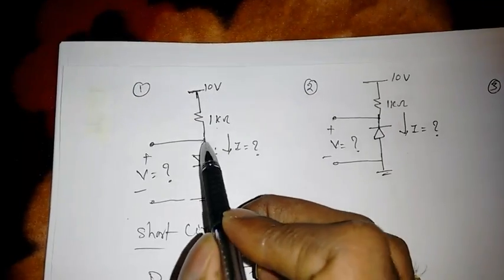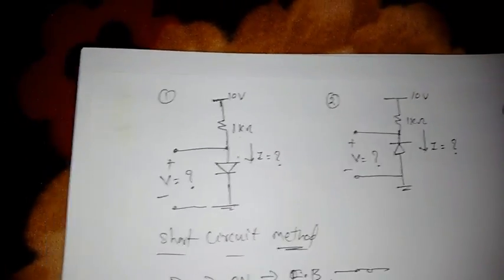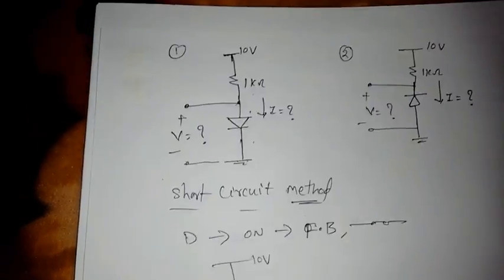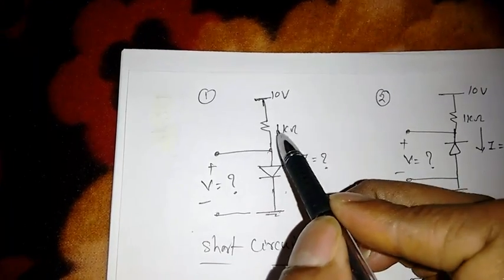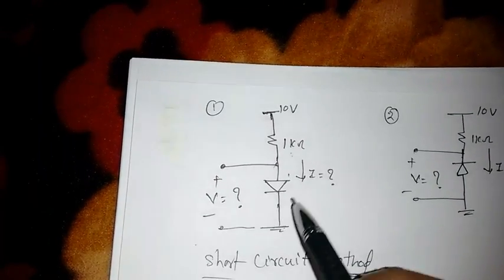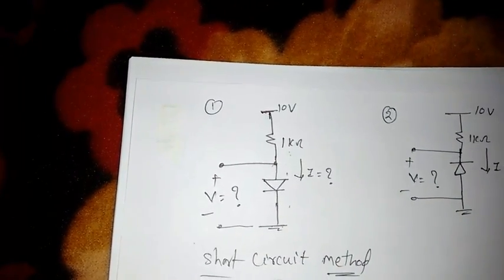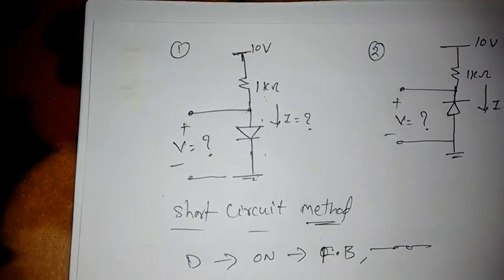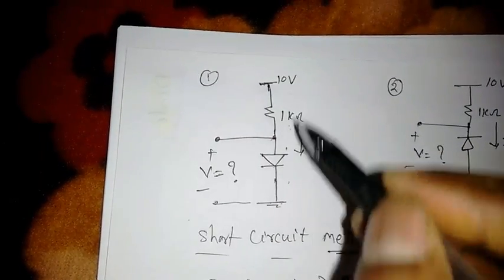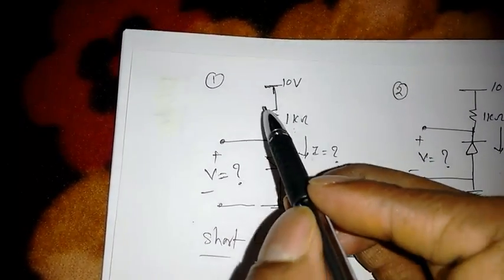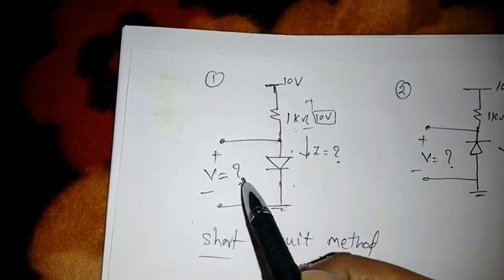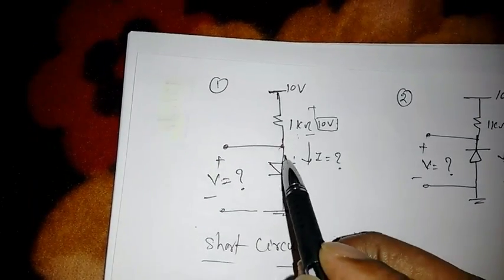Now, I is equal to 10 milliampere. If you ask what is the voltage across this diode — the resistor is 1 kilo ohm and current is 10 milliampere, so the voltage drop across the resistor is approximately 10 volts. The remaining voltage across the diode is approximately 0 volts, because across the short circuit there is a 10 volt drop and ideally V across the diode will be 0.